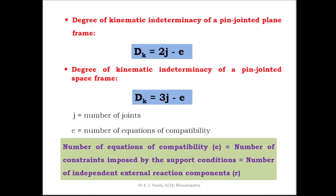The degree of kinematic indeterminacy of a pin-jointed plane frame can be denoted by dk. The formula is dk = 2j − c, where j is the number of joints and c is the number of compatibility equations.